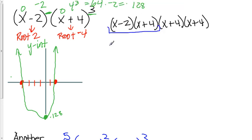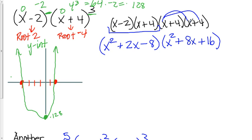Multiplying these two together first would get you x squared plus 2x minus 8. Multiplying these two together would get you x squared plus 8x plus 16 because you're doing that.